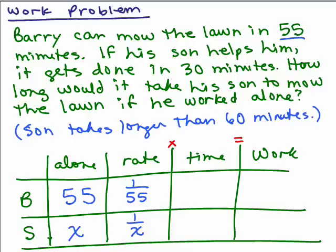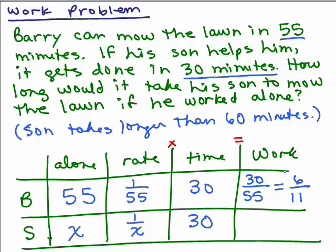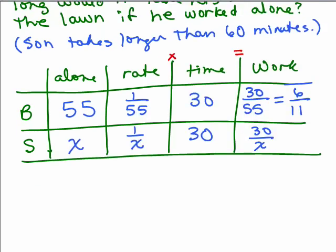Next, how long are they going to work together to get the job done? It gets done in 30 minutes. So they're each going to work 30 minutes. So now we can do their rate times time to figure out how much work each of them completes. So Barry is 1/55th times 30, or 30 over 55. And you could reduce that, because 5 goes into both numbers, to 6 elevenths. And the son, his rate times time is 1 over x times 30, which is 30 over x.